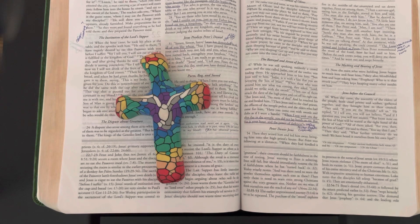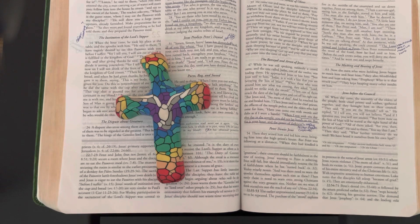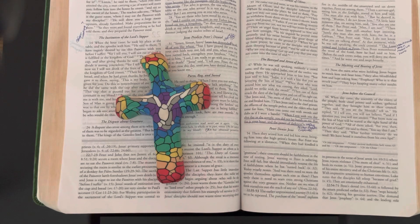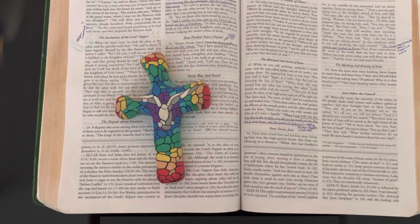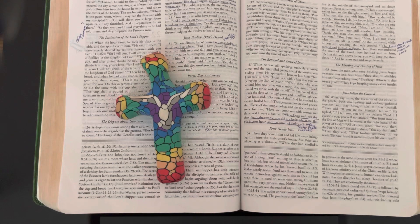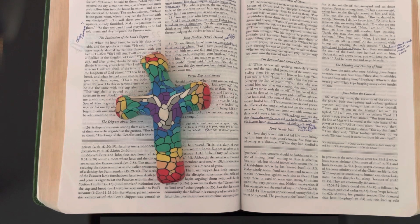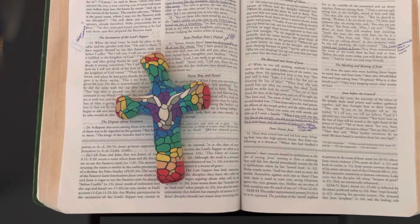When day came, the assembly of elders of the people, both chief priests and scribes, gathered together and they brought him to their council. They said, "If you are the Messiah, tell us." He replied, "If I tell you, you will not believe. And if I question you, you will not answer. But from now on the Son of Man will be seated at the right hand of the power of God."